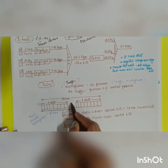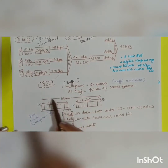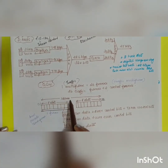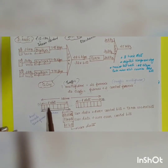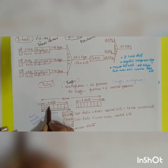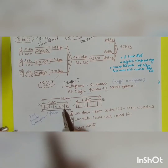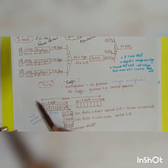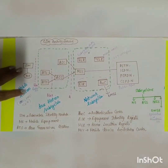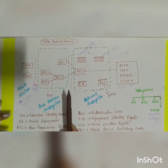The diagram shows a multi frame consisting of 26 different frames, with a time duration of 120 milliseconds. A single frame consists of eight different slots, and each slot has 156.25 bits.